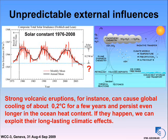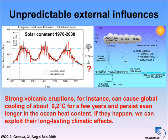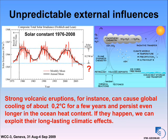We cannot predict volcanoes; we cannot predict solar radiation. However, if they happen, we can account for their effects — and these effects may be quite long-lasting. For instance, volcanic effects can live in the ocean for more than one decade. We should be prepared to include these effects if they happen, and this provides some additional predictability to our system.